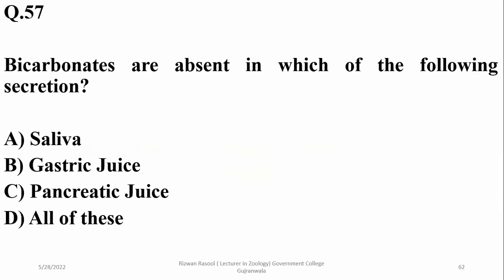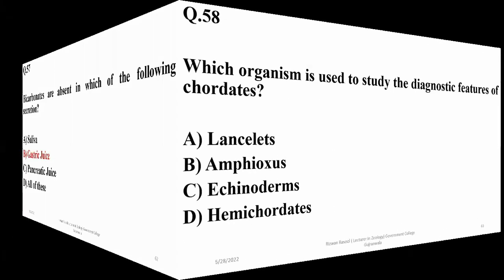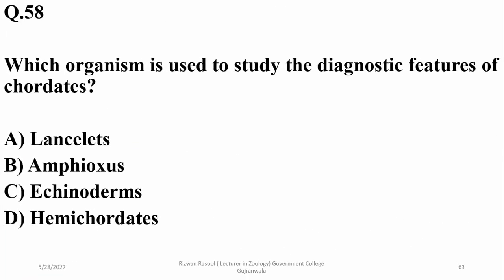Bicarbonate is present in which of the following secretions? Bicarbonate may be present in saliva and pancreatic juice, but it is usually absent from gastric juice. So given the options, gastric juice is the answer.